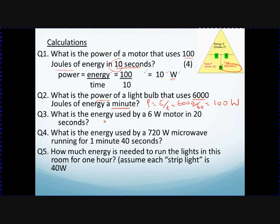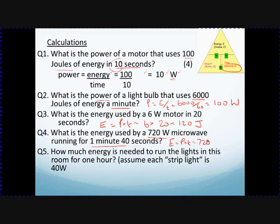Now find the energy used by a 6 watt motor in 20 seconds. Here we rearrange: energy equals power times time. The power is 6 watts and the time is 20 seconds, so 6 times 20 equals 120 joules. Finally, the energy used by a 720 watt microwave running for 1 minute 40 seconds: energy equals power times time, 720 watts times 100 seconds equals 72,000 joules.